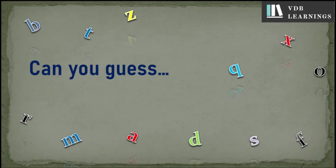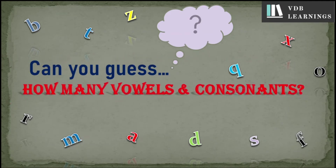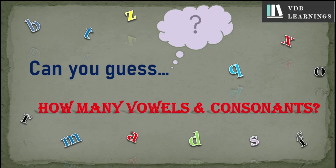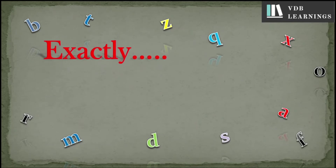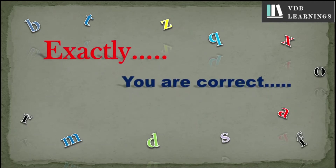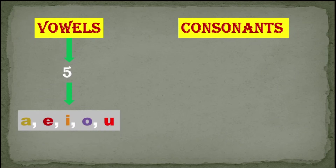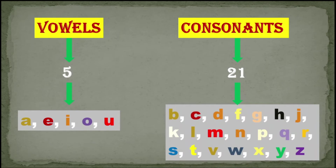Can you guess how many vowels and how many consonants are there in the English language? Yes, just guess it. Exactly, you are absolutely correct. There are five vowels: A, E, I, O, U. And there are 21 consonants, from B, C, D all the way to Z — not including A, E, I, O, U. So five vowels and 21 consonants.